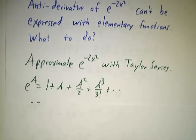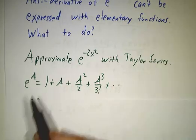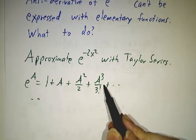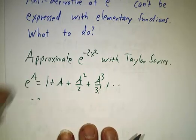Remember that e to the x is 1 plus x plus x squared over 2 plus x cubed over 6, etc. In fact, e to the anything is 1 plus that anything plus that anything squared over 2 plus that anything cubed over 6 and so on. So we just plug in a equals minus 2x squared.